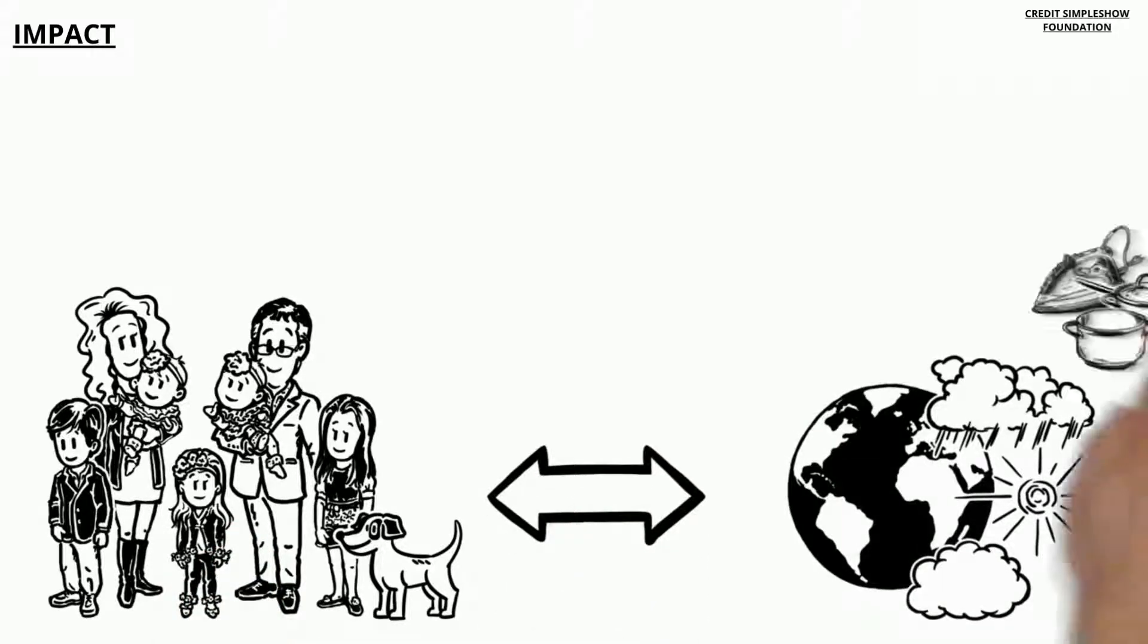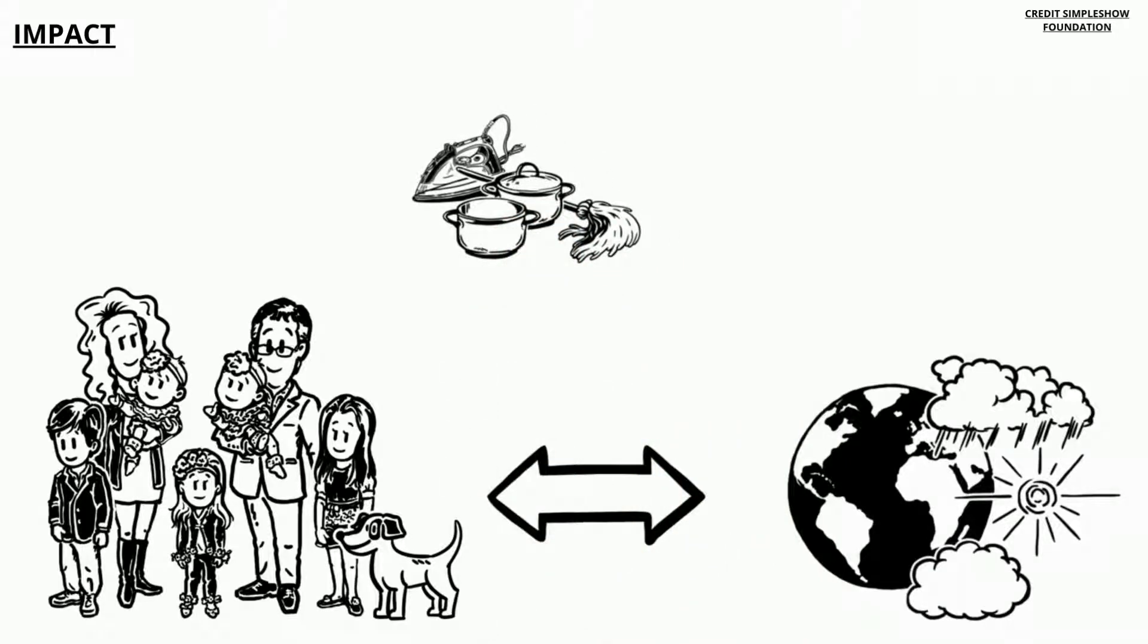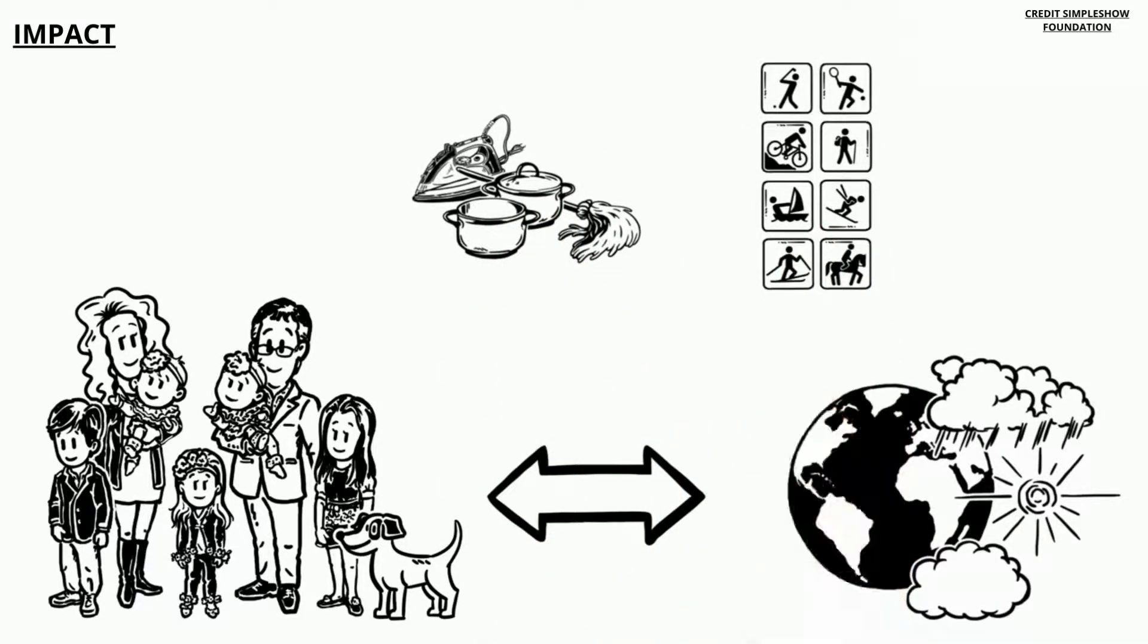Meet the Johnson family. Like many other families in the world, they are linked to climate change. This is because typical household items and activities directly influence climate change.